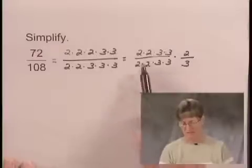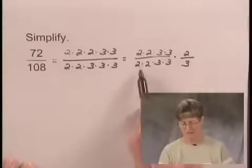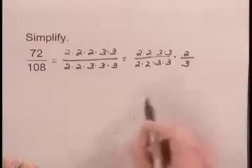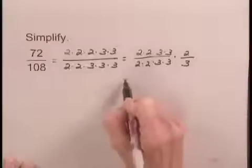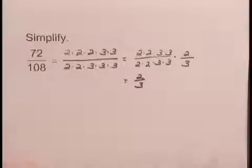Now, this first fraction is a number divided by itself. 2 times 2 times 3 times 3 divided by 2 times 2 times 3 times 3 is just equal to 1. So what I have here is 1 times 2 thirds, and that is going to simplify then to 2 thirds.